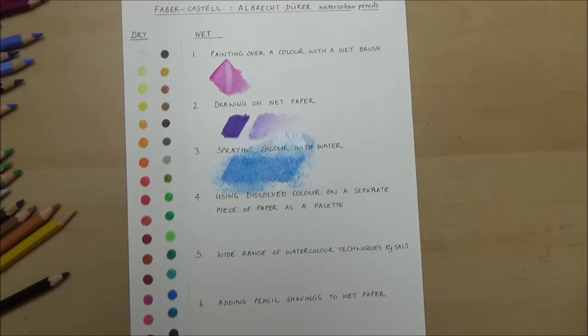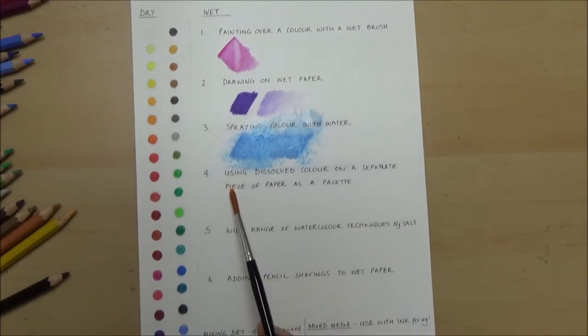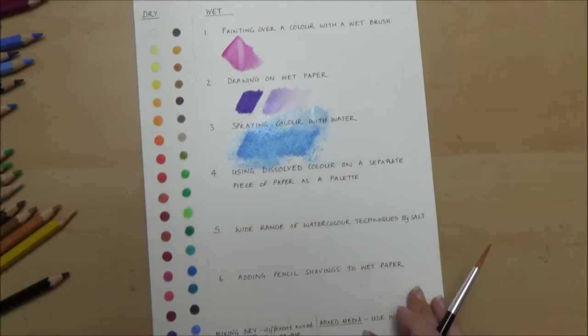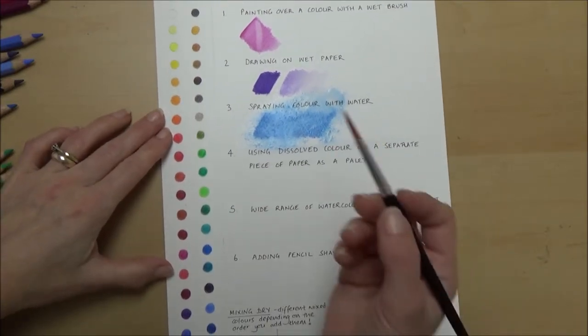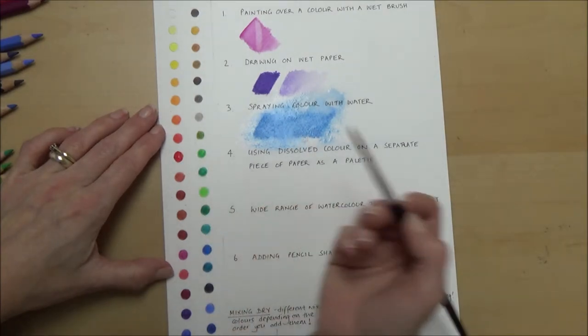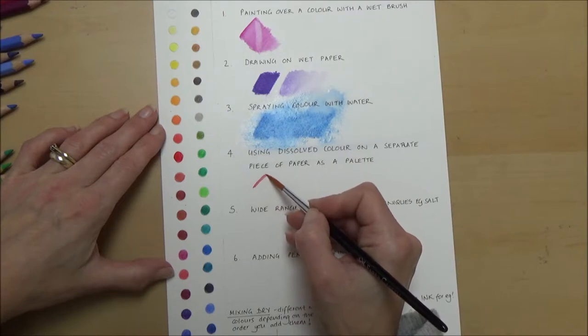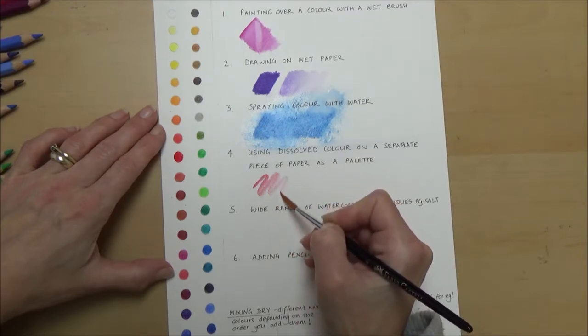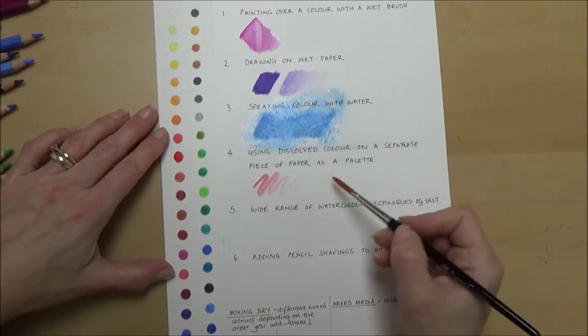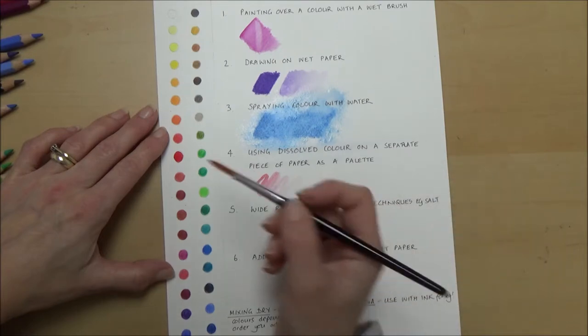The fourth technique that I'm going to try is using the colors on the left hand side that I put down dry almost as a paint palette in themselves. So if you didn't want to apply the pencil first you can just use these little dots of color as paint in their own right, just like a palette. As you can see it works just like you're using a pan or something like a watercolor pan.